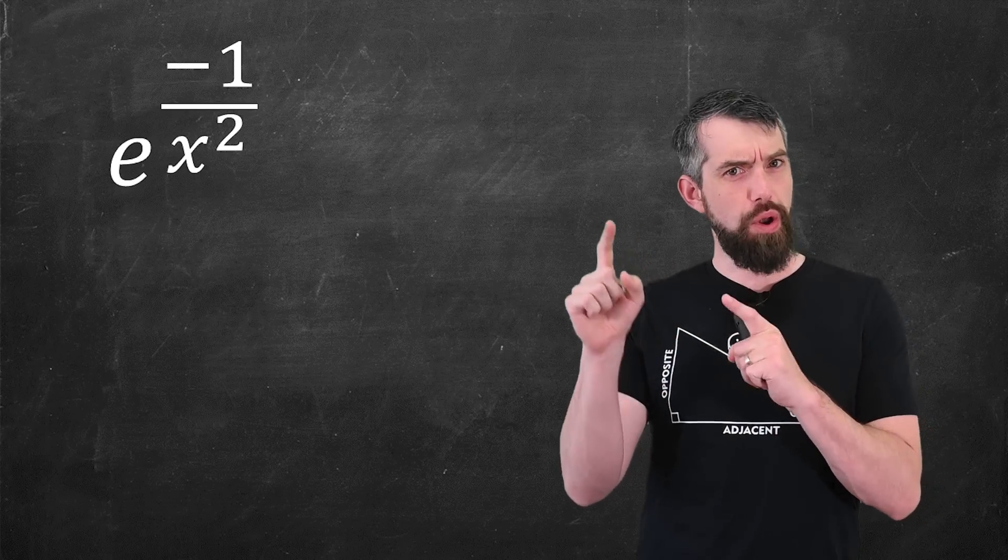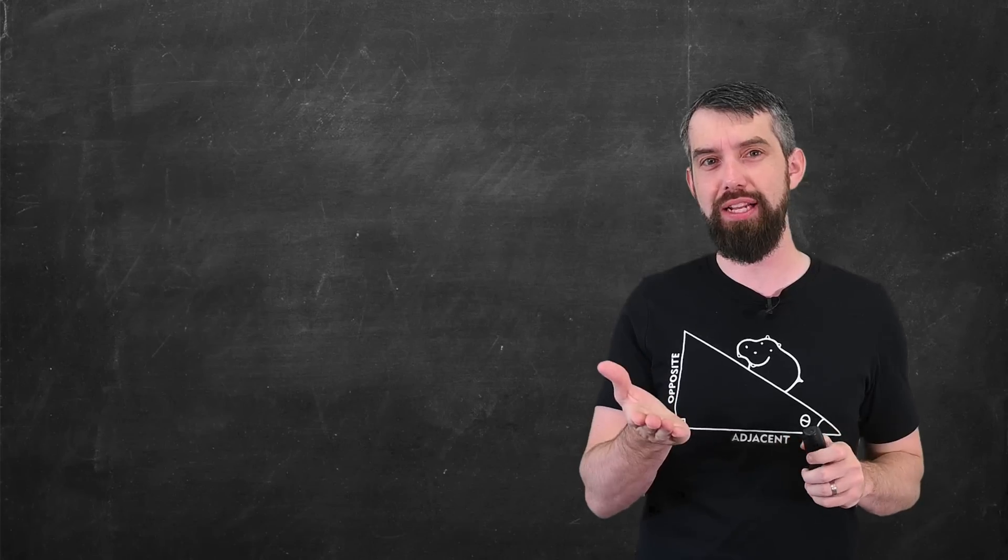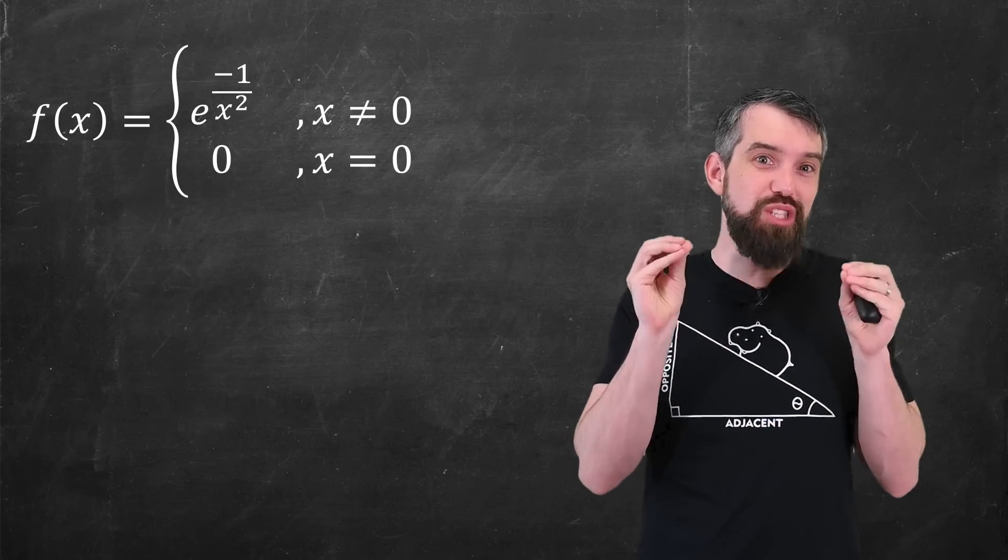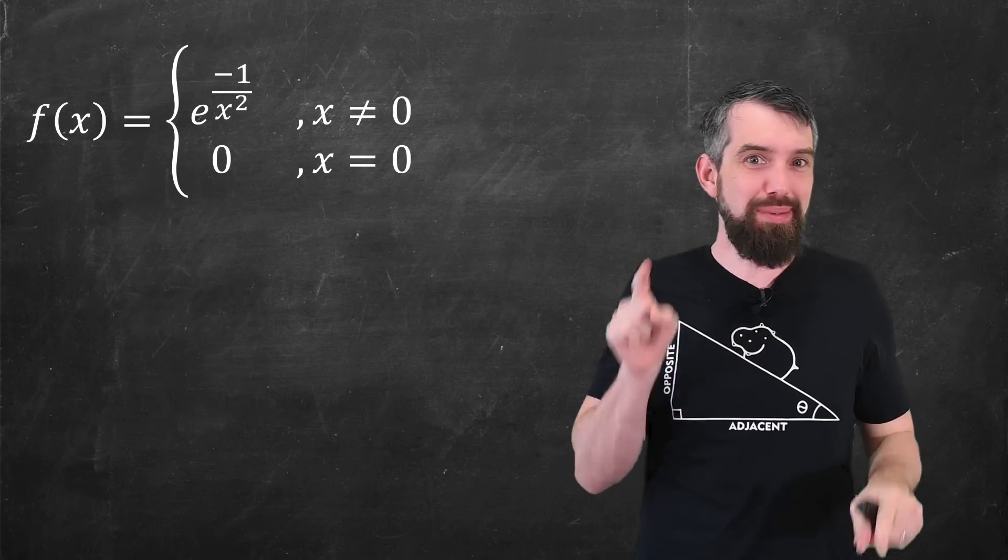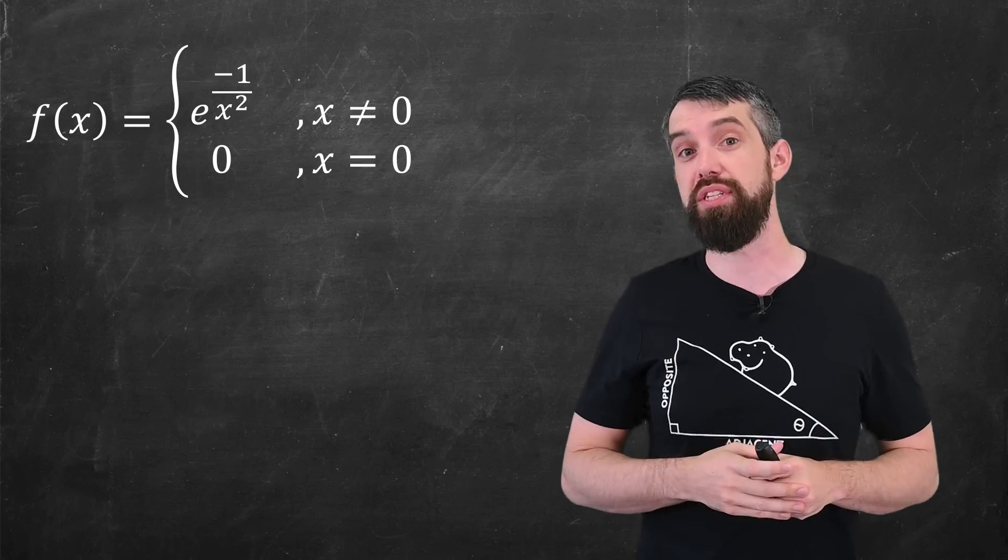Now, e to the minus 1 over x squared actually isn't defined exactly at 0. I mean, this is just undefined. And so I'm actually going to give a slight tweak on my function. It's e to the minus 1 over x squared everywhere else. But I'm just going to input it in a piecewise way that at x equal to 0 is just equal to 0.